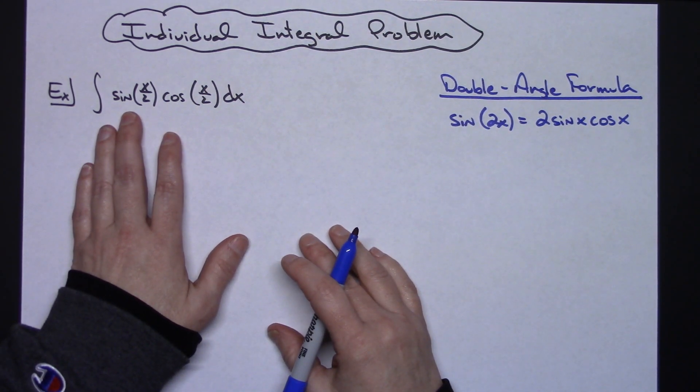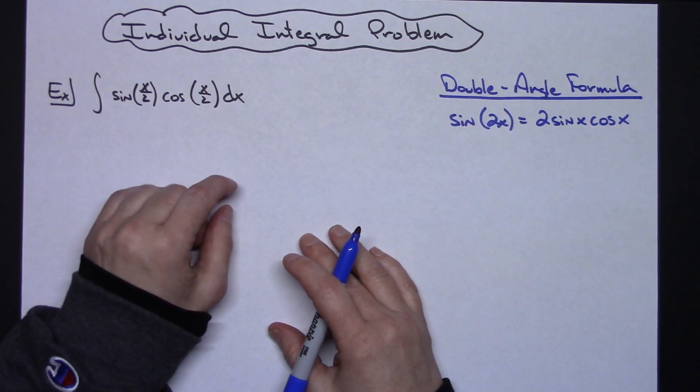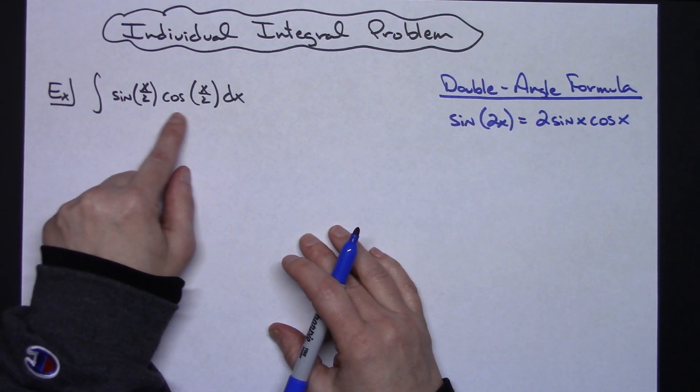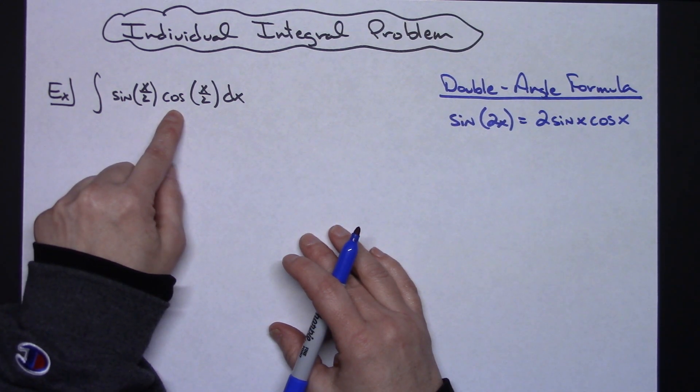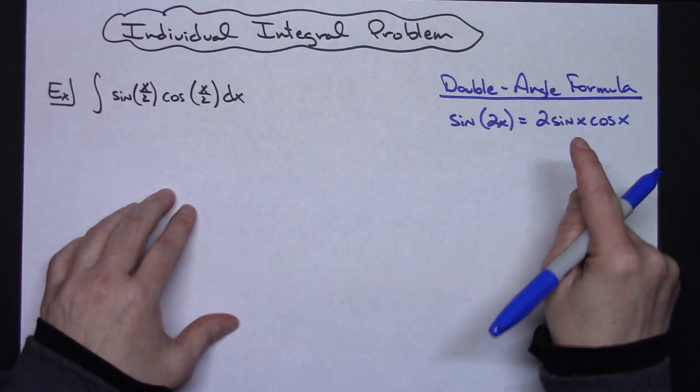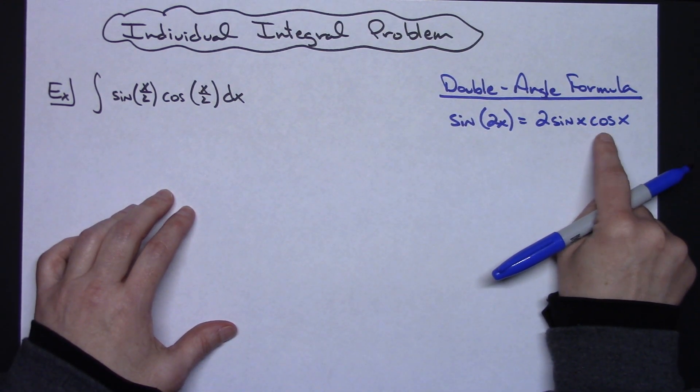Let's say I've got the integral of sin(x/2) times cos(x/2) dx. Now what I'm hoping is that you can look at this and go, oh I've got sine times cosine, and then what's going to come to mind is a double angle formula where I've got a sine times a cosine.